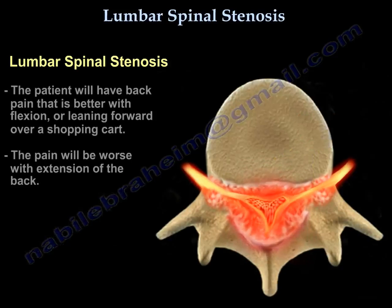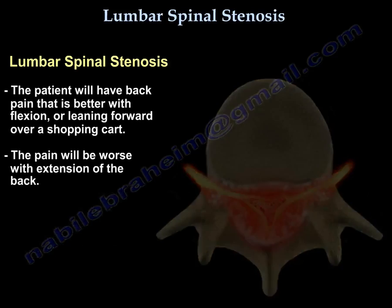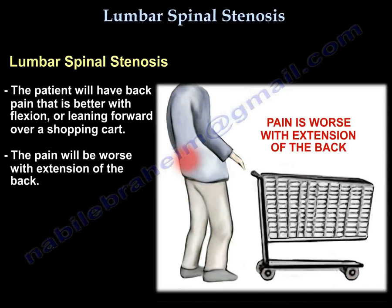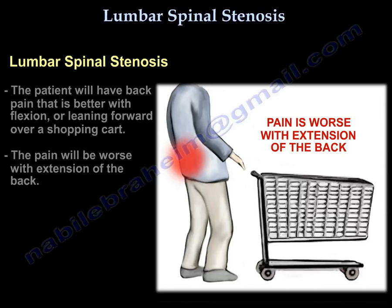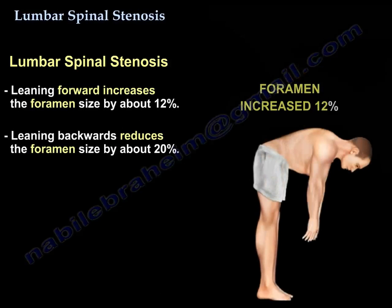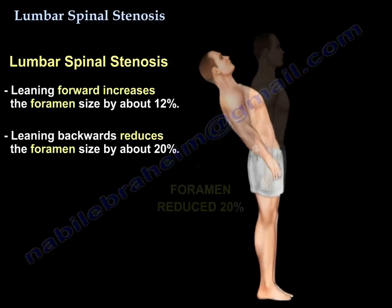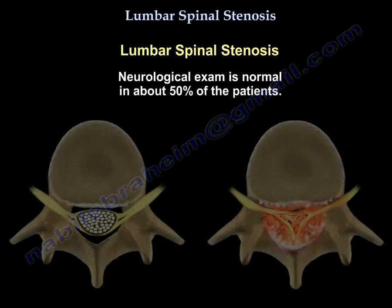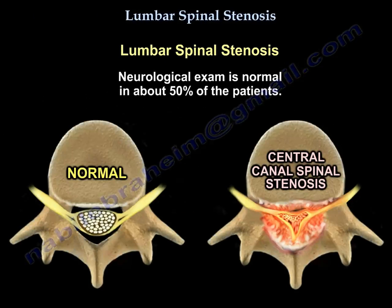Back pain is better with flexion because it opens the foramen — this is the shopping cart sign. It is worse with extension of the back. When you lean forward, you increase the foramen size by 12%. When you lean backwards, you reduce the size of the foramen by about 20%. A neurological exam is normal in about 50% of patients.